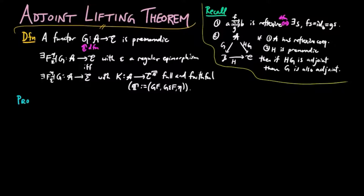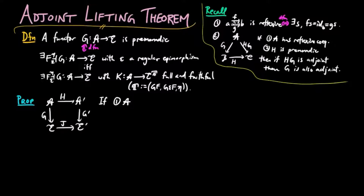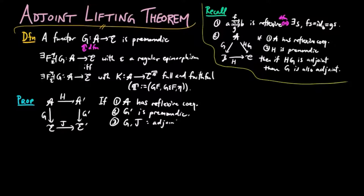The adjoint lifting theorem is as follows. Suppose we have a commutative square of functors. If the category A has co-equalizers of reflexive pairs, G prime is premonadic, and G and J are adjoint functors, then H is an adjoint functor.